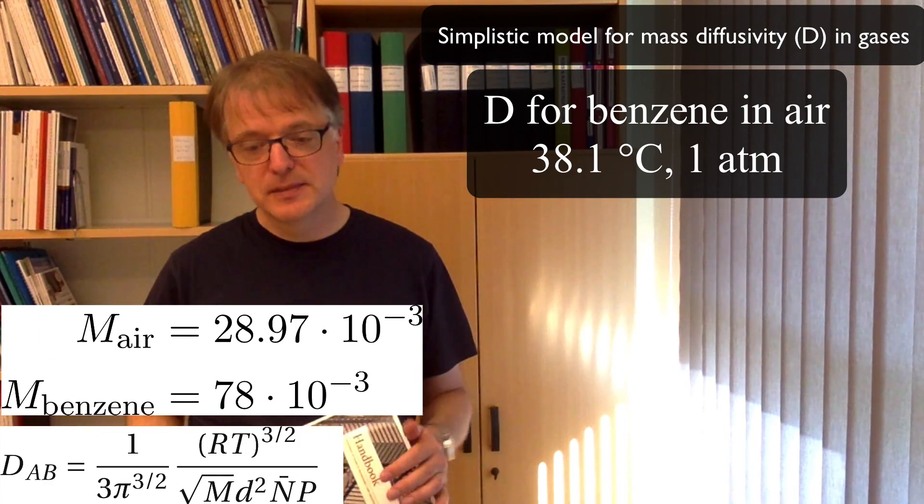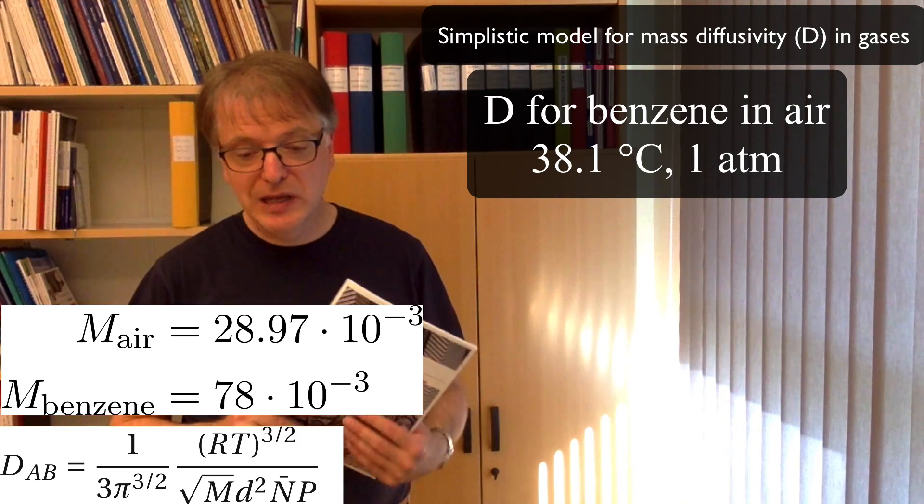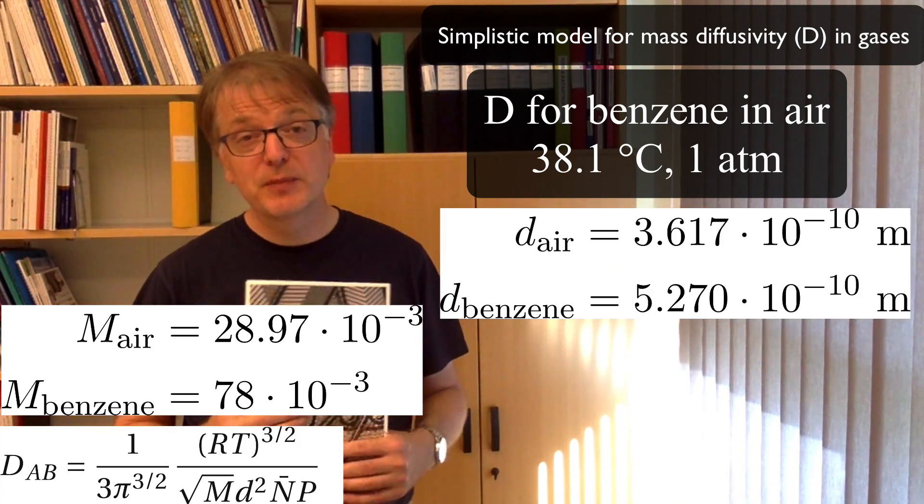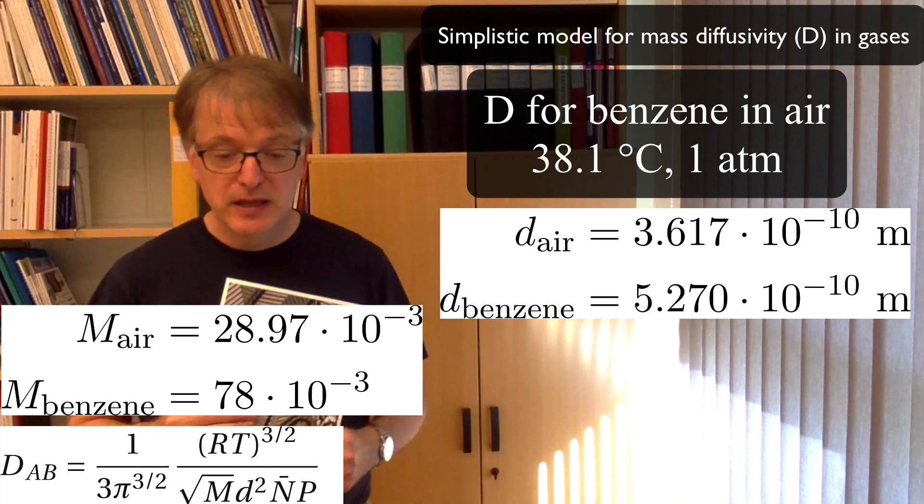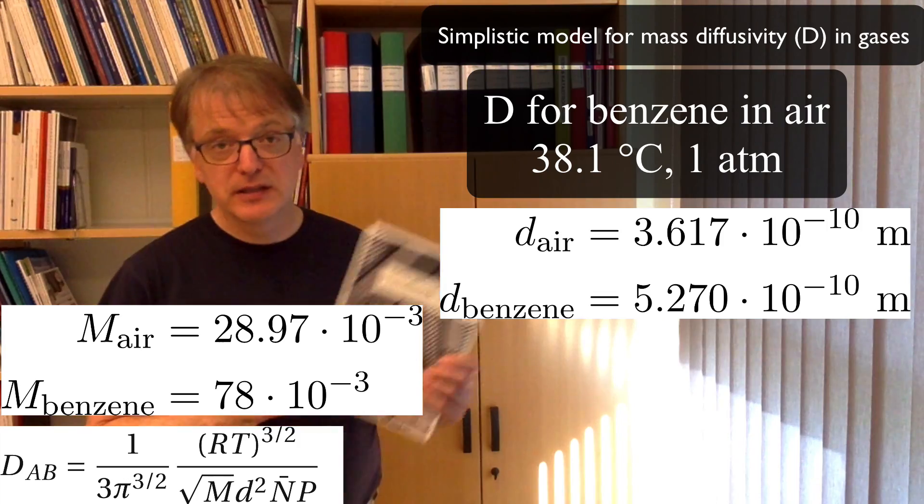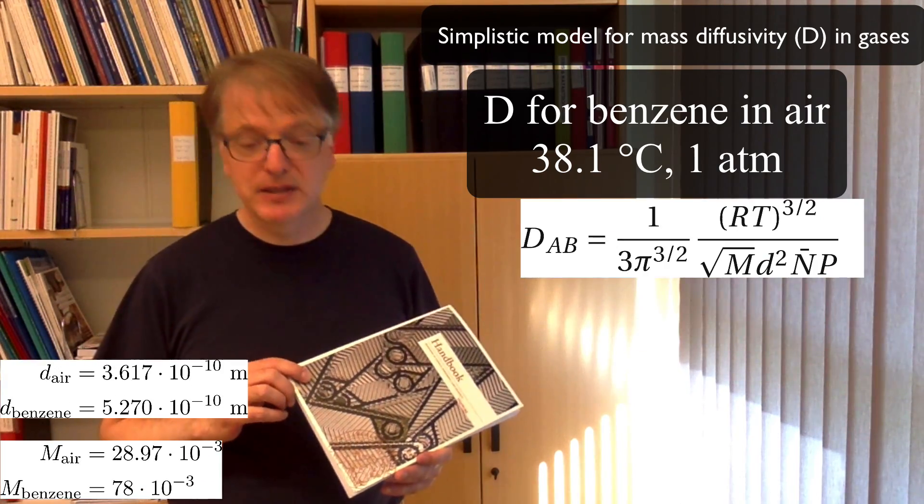The molecular size. Well, you have a handbook. And you can look it up for air, which is 3.617 times 10 to the power minus 10 meters. And for benzene, it's according to this handbook, 5.27 times 10 to the power minus 10 meters.